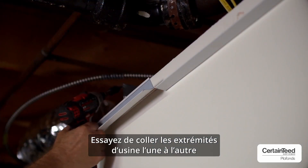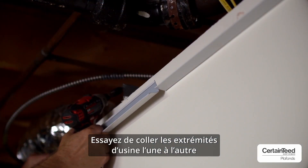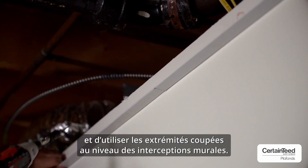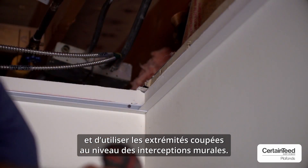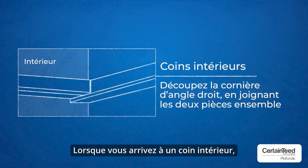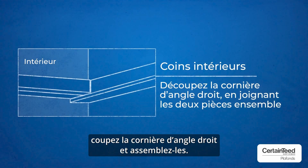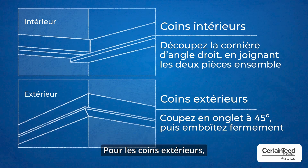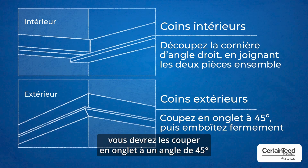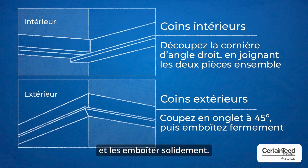Try to butt the factory ends to each other and use the cut ends at the wall intersections. When you get to an inside corner, cut the wall angle straight and join them together. For outside corners, you will need to miter them at a 45 degree angle and fit together tightly.